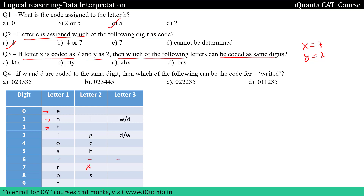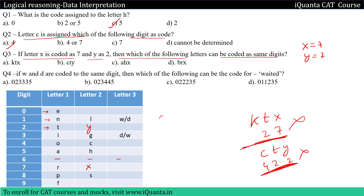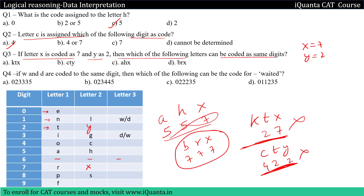Third one: if letter X is coded as 7 and Y as 2, then which of the following letters can be coded as the same digit? So we put X under 7 and Y under 2. First option T, T, X — X is 7 and T is 2, so we have two different digits — not possible. Second option C, T, Y — T is 2, Y is 2, but C is 4 — not all same digits. Third option A, H, X — A is 5, H is 5, but X is 7 — not same digits. For option D, B, R, X — X is 7, R is 7. B is a new letter — we can assign it 7 since under a digit we can have at most three alphabets. So option D is correct.